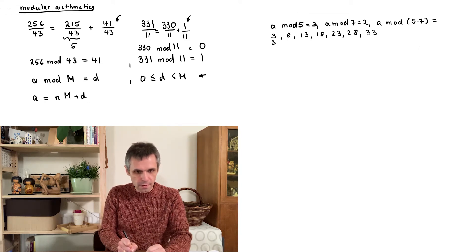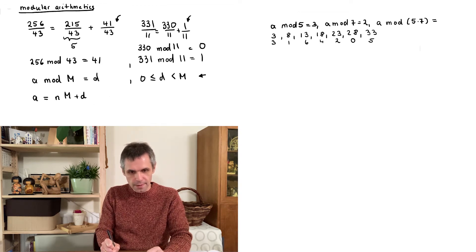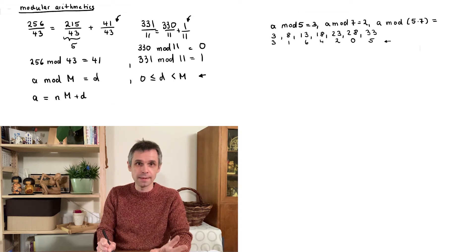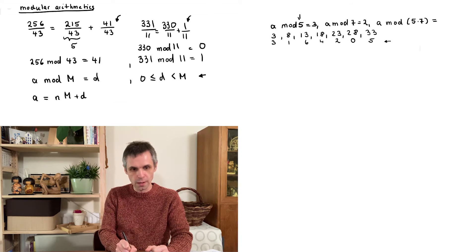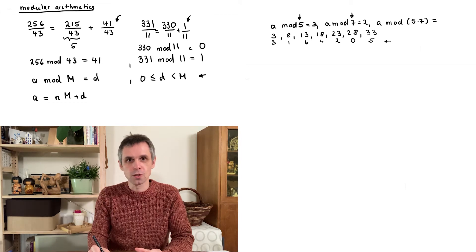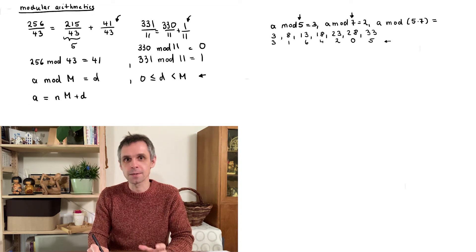Looking at these numbers modulo 7, we get 3, 1, 6, 4, 2, 0, and 5 — all possible remainders from 0 to 6 appear. This is because we fulfilled a central condition of the Chinese Remainder Theorem: the numbers 5 and 7 do not share any common prime factors. In this case, they are both distinct primes. This condition suggests an interesting relation between modular arithmetics and finding the prime factors of numbers.